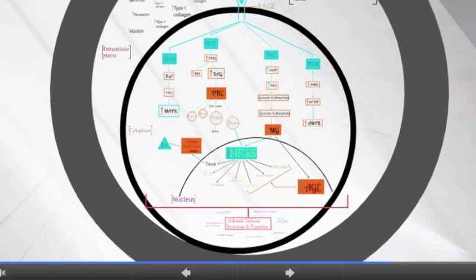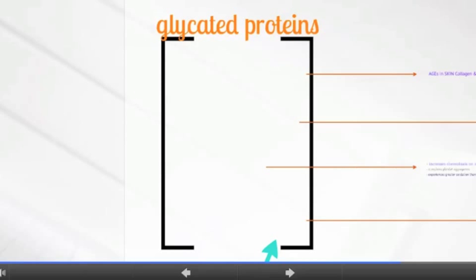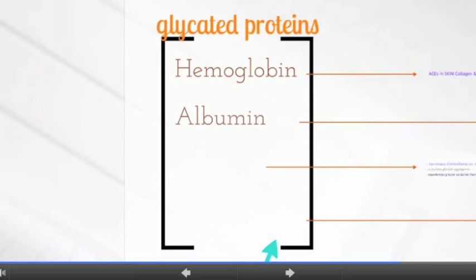As the formation of AGEs increases, they accumulate in both serum and in skin. Accumulation of AGEs in serum is indicated by elevated concentrations of glycated carrier proteins, such as glycated hemoglobin, albumin, LDL, apolipoproteins, and fibrinogen.